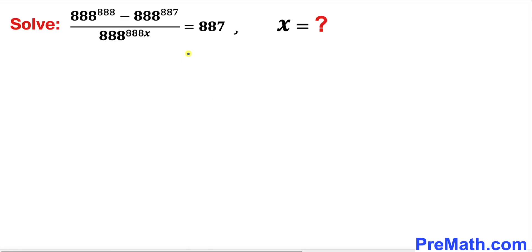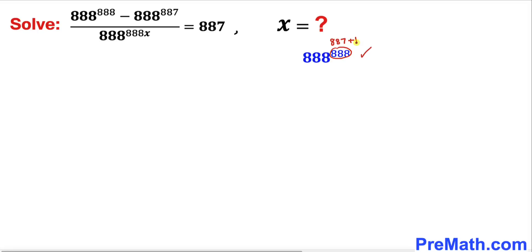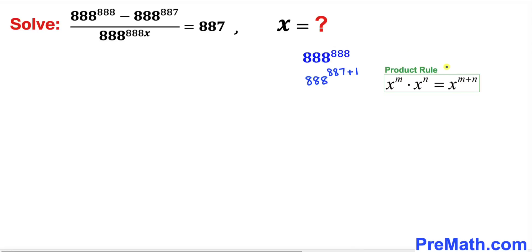The very first thing we are going to do is focus on this very first term on the top: 888^888. Let's focus on its exponent 888 — we are going to tweak it. We can write this one as 887 plus 1, as you can see in the next step. Now let's recall the product rule, which we are going to apply here.